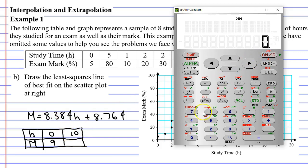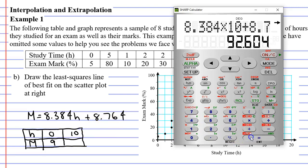So we follow the equation 8.384 times an H value of 10 plus 8.764. And let's round this to 93.